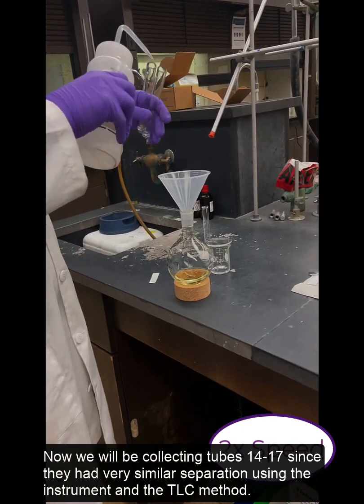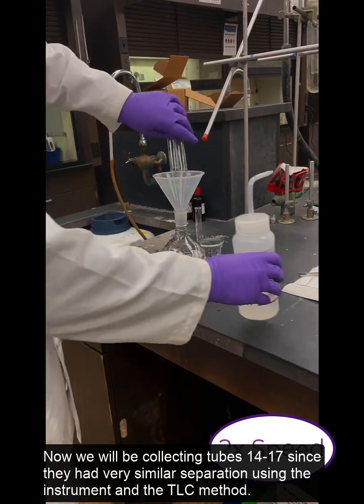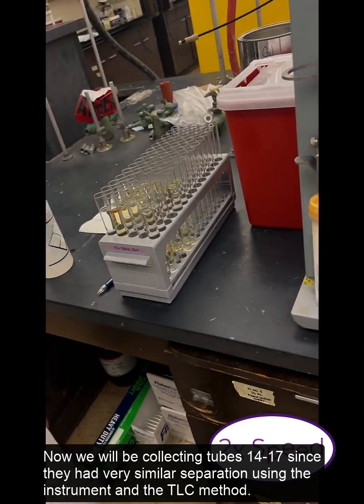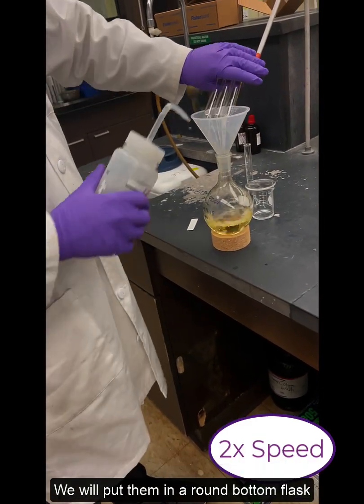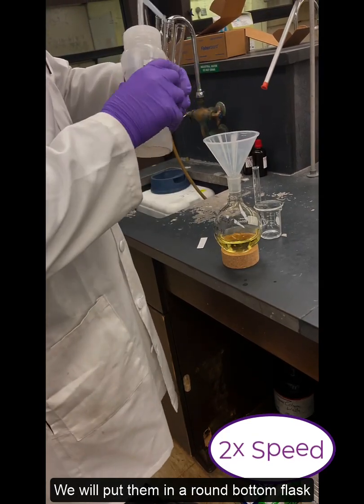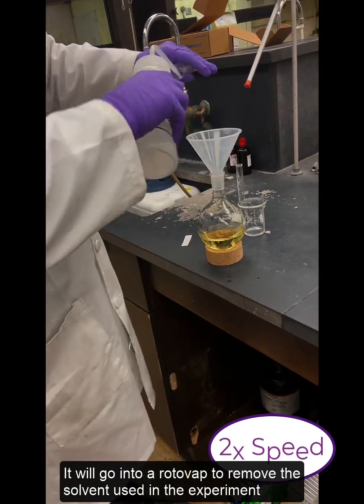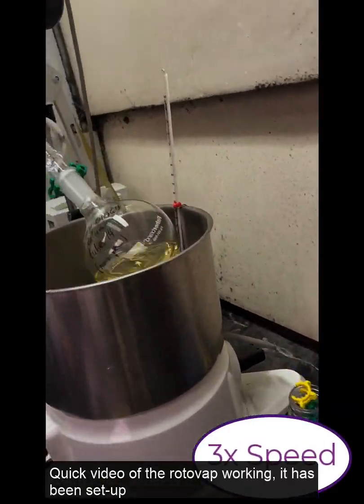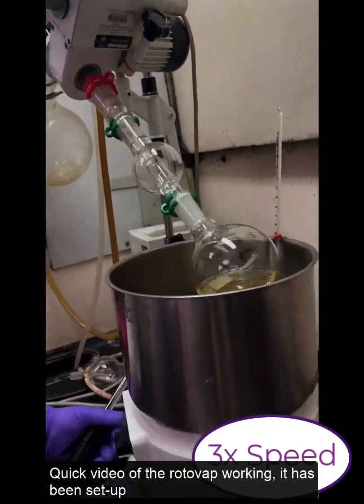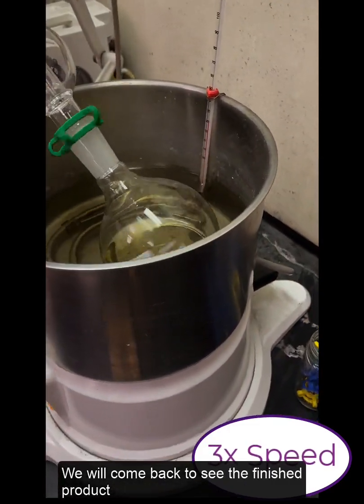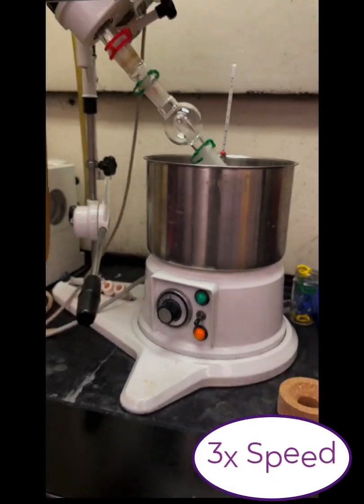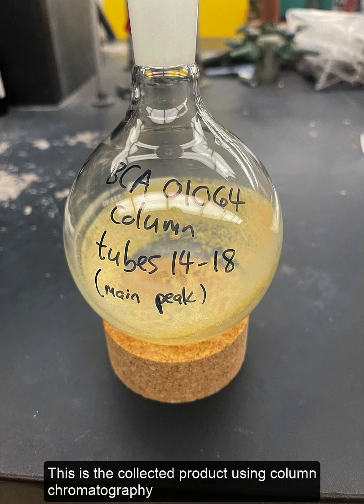So now we'll be inserting tubes 14 through 17 since they had very similar separation using the instrument as well. Using the TLC method we'll put them into a round bottom flask and into the rotavap in order to remove the solvents that were used in the experiment. This will be a quick video of the rotavap working. It's been set up and we'll come back to see the finished product. This is the collected product using column chromatography.